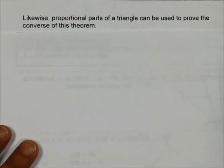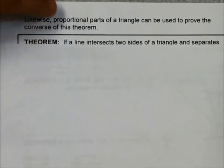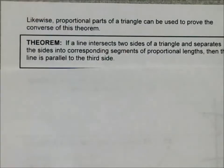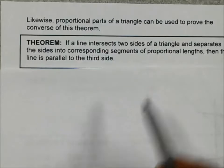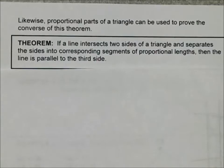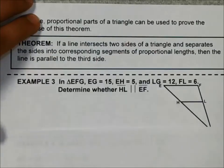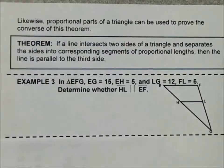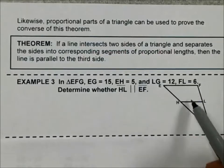Likewise, proportional parts of a triangle can be used to prove the converse. So we're going to go backwards. If a line intersects two sides of a triangle and separates the sides into corresponding segments, and they happen to be proportional, then the line is parallel to the third side. My conclusion is I'm going to try to prove and make a conclusion that these two lines are parallel.